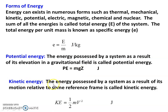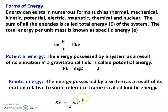Kinetic energy is the energy possessed by a system as a result of its motion relative to some reference frame. Kinetic energy equals one-half M V squared. V is the velocity in meters per second, M is the mass of the system. Remember the formula: potential energy = MgZ, kinetic energy = (1/2)MV².